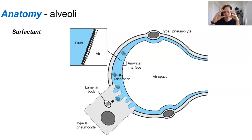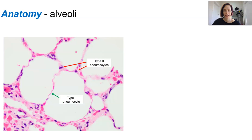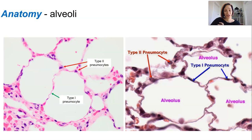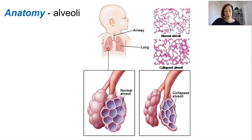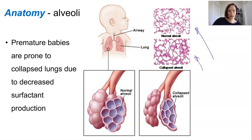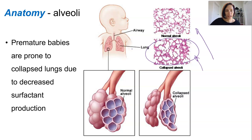If water molecules do stick together, the alveoli will collapse like a deflated balloon. Microscopic images of alveoli show that it's mostly empty space, with room for air to come in from the bronchioles. Premature babies actually have less surfactant and are prone to collapsed lungs because of it — in a collapsed alveolus there's much less air space, so gas exchange isn't as efficient.